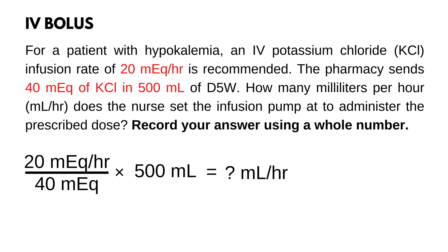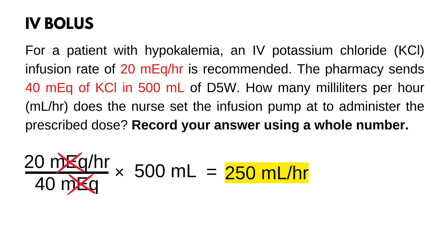Now we can calculate: 20 mL equivalent per hour divided by 40 mL equivalent times 500 mL. mL equivalent cancels out and the answer is 250 mL per hour.